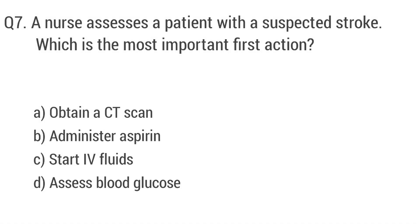Question number seven. A nurse assesses a patient with a suspected stroke. Which is the most important first action? The right answer is option D: assess blood glucose.